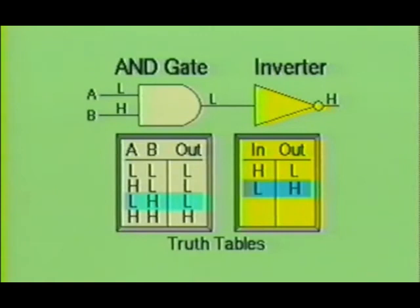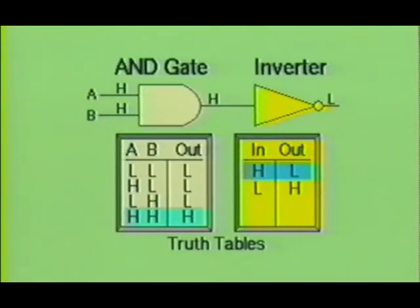Now let's make input A low and input B high. Once again, we can expect a high at the output of the inverter gate. Since A is low and B is high, the AND gate will produce a low into the inverter, which is then inverted into a high signal. Only by making both inputs A and B high can we force a low at the output of the inverter gate. When input A is high and input B is high, we get a high at the output of the AND gate. This high signal is fed into the inverter gate and is changed, or inverted, into a low.